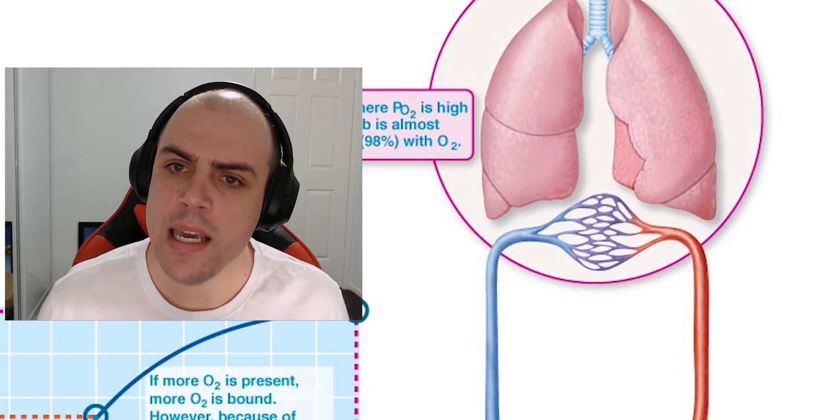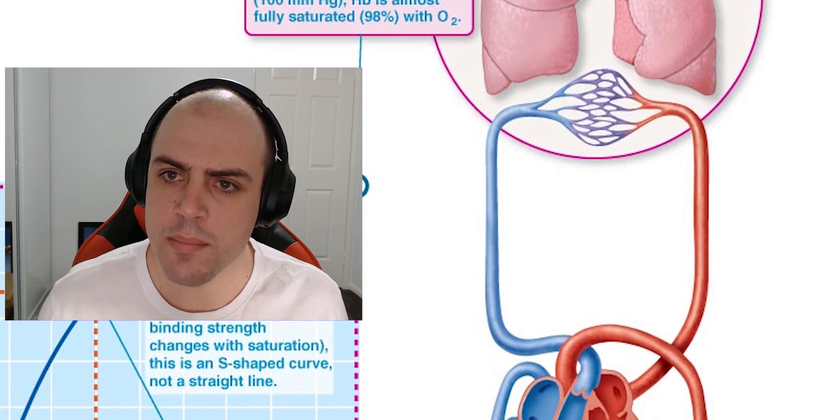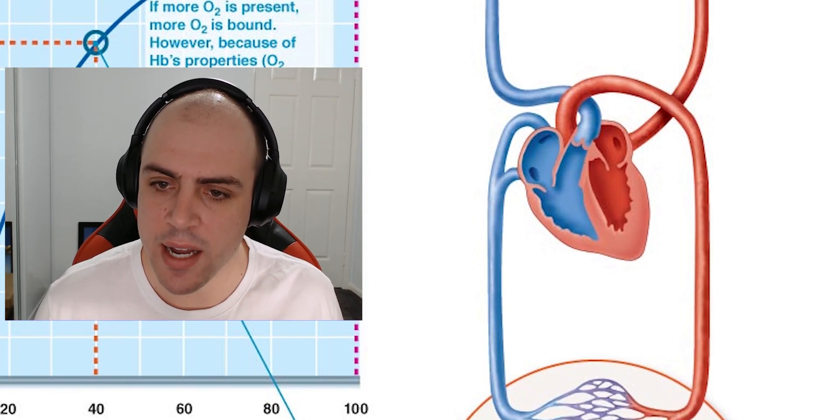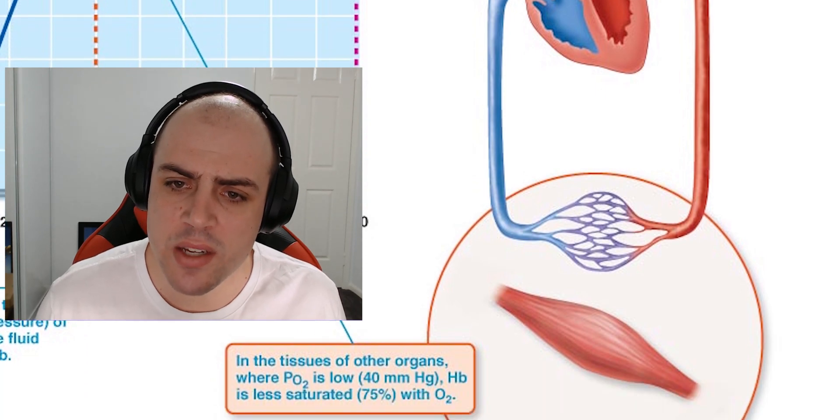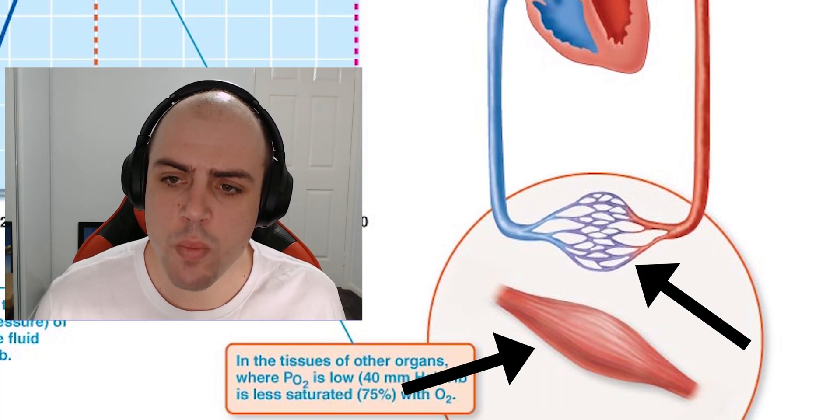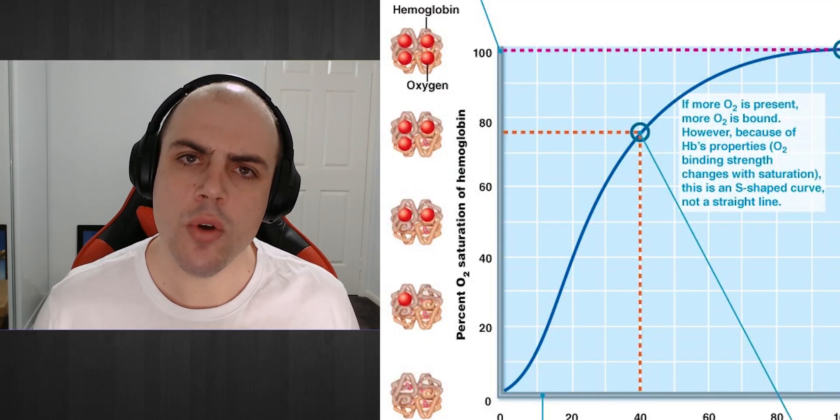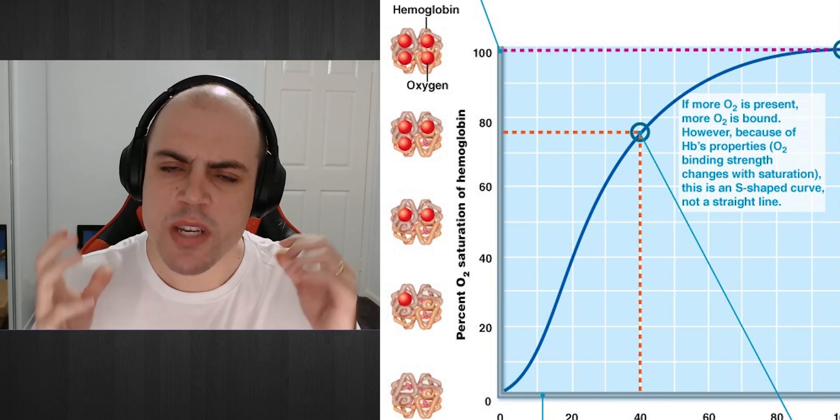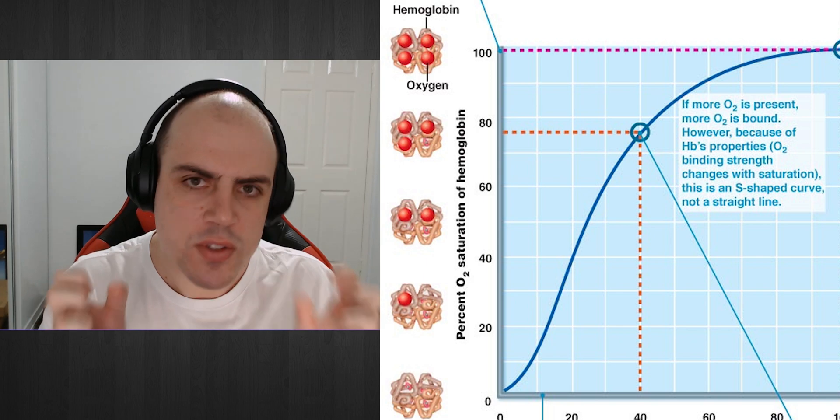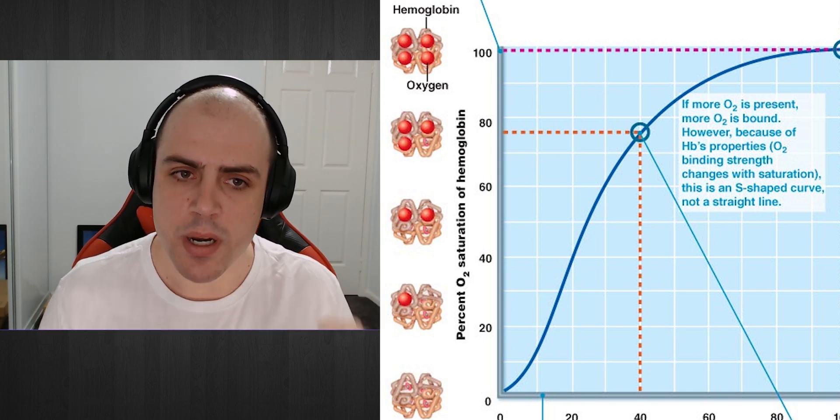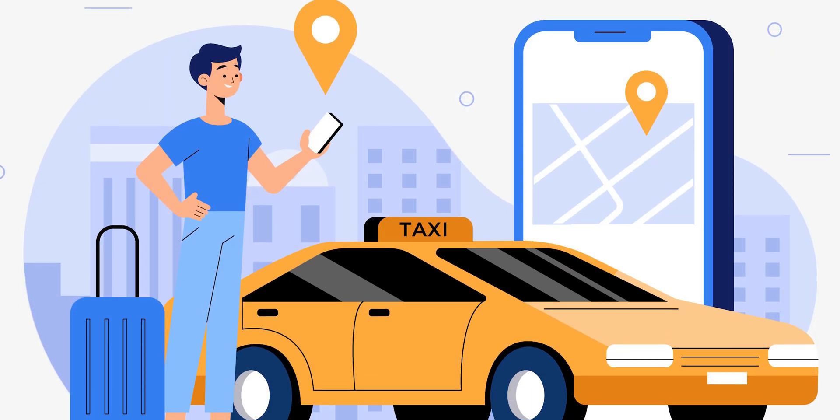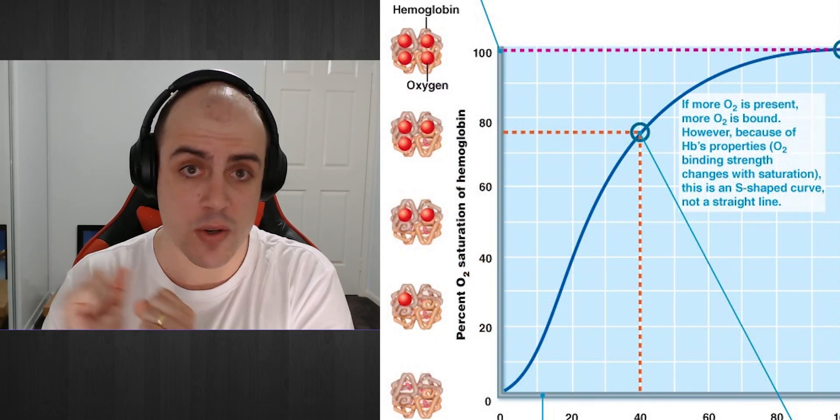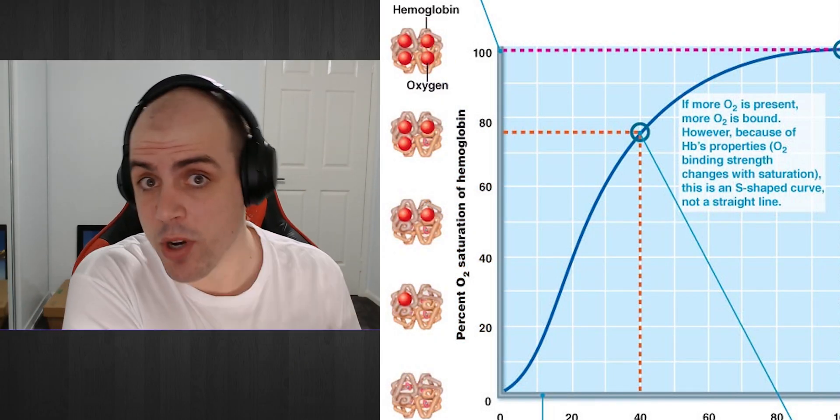But as we leave the lungs and come down to the pulmonary vein and enter the left side of the heart and the systemic circuit, as we begin to move towards the tissues, we don't want hemoglobin to be in its R state anymore because we don't want hemoglobin to hold on to those oxygen molecules. The purpose of hemoglobin is to act like the Uber taxi driver. It's all well and good to pick up oxygen, but it needs to drop it off at some point.